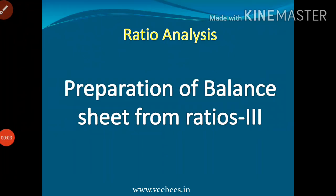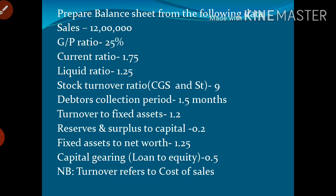Today we are going through another problem related to preparation of a balance sheet from ratios. It is similar to those we have already covered: sales and gross profit used to calculate cost of goods sold, current ratio and liquid ratio used to calculate current assets and current liabilities, stock turnover used to calculate stock, debtors turnover to calculate debtors, turnover to fixed assets to calculate fixed assets, reserves and surplus to capital, fixed asset to net worth to calculate net worth, and gearing ratio to calculate loan. Here, turnover refers to cost of sales.